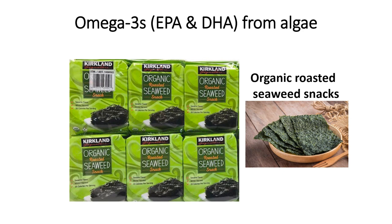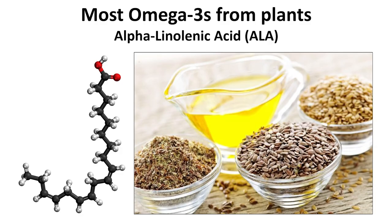Algae is the only plant source of the two omega-3s found in fish oil — EPA and DHA. This makes an organic seaweed snack so attractive. ALA is less potent but with proven cardioprotective benefit. A small amount of ALA is converted to EPA and DHA in your body; however, the benefits of ALA are not dependent on this conversion. Excellent sources of ALA include walnuts, chia seeds, and flaxseed.